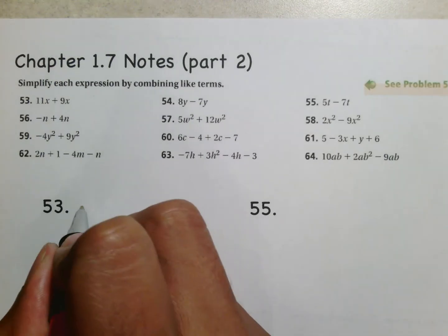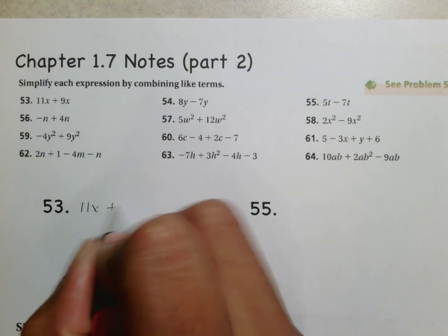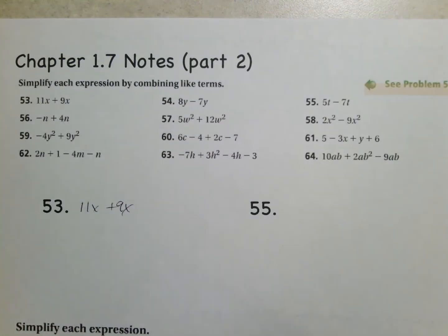Either way 53 starts with 11x plus 9x. We call these two things like terms. The reason we call them like terms is because both of them have a x on it. And your job whenever you see like terms is to organize or simplify the system here.